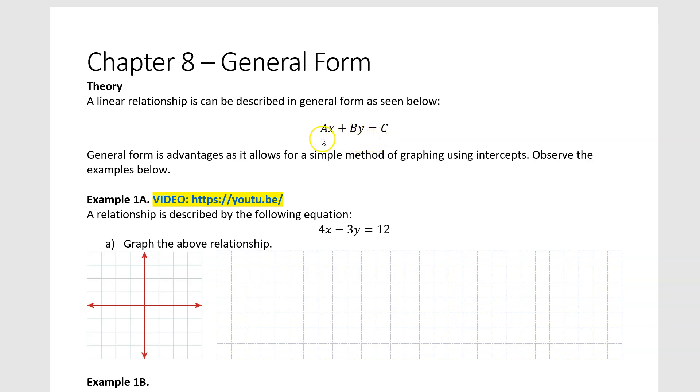So the general form itself is a way in which we can arrange a linear relationship. As you can see where the cursor is here, it's typically in the form of Ax plus By equals C, where A and B are coefficients in front of the x and the y, and C is simply a constant. We always have the A or the x and the y on the left-hand side of the equation, where A is always the first term.